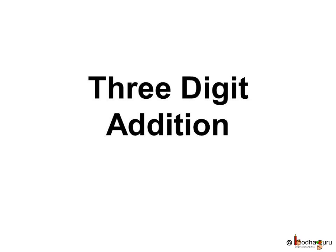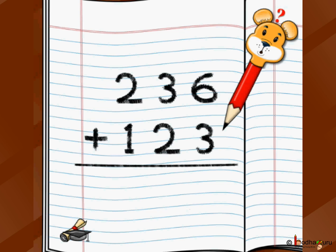Hello children, in this video we are going to learn how to add two numbers that are three digits. Let's start. Let's say we have 236 as the first number. Say you have 236 bags and you want to add 123 bags to it. So there was a farmer who had 236 bags from his first farm and 123 bags from his second farm.